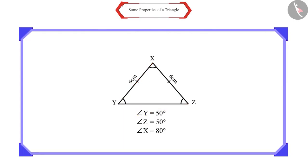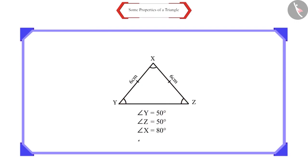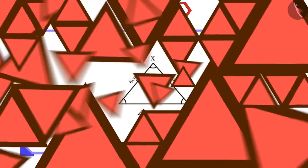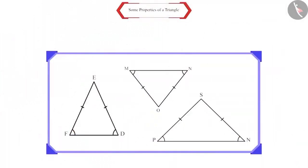Now you can see that the measure of angle Y and angle Z is equal, and both these angles are opposite to the equal sides. Pause the video to repeat this activity for other isosceles triangles.